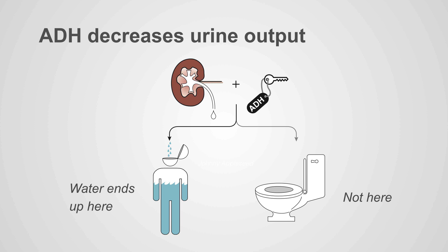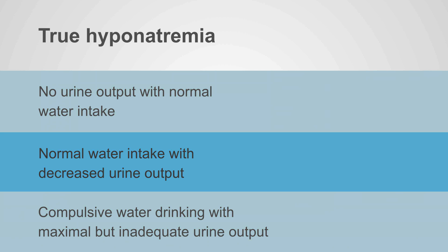Just a reminder: ADH acts to decrease urine output, and ADH is a central hormone in the evaluation and management of hyponatremia. This is the schema introduced in the last chapter, going over the three main categories of hyponatremia.